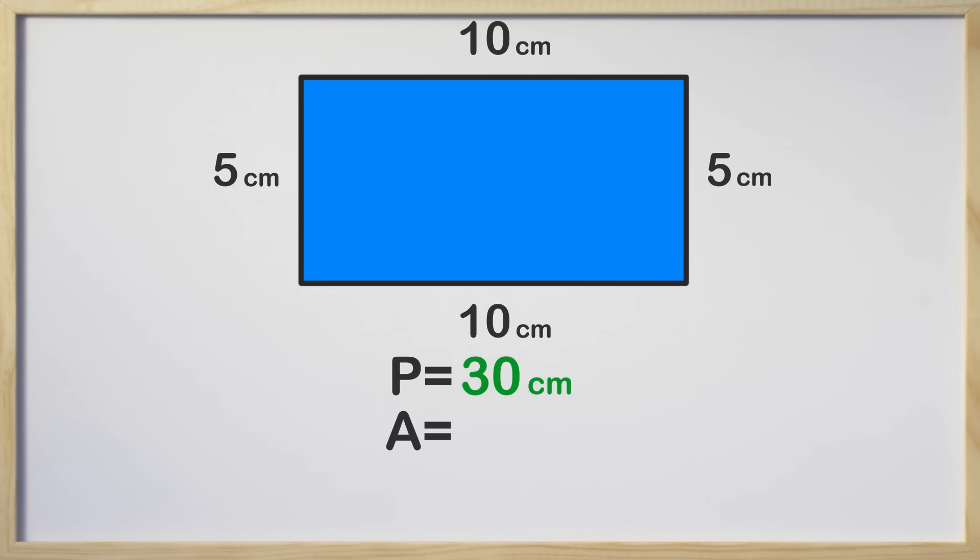To find the area of a square or rectangle you might remember you multiply the length times the width. 5 times 10 is 50 centimeters squared. As you can see area is not the same as perimeter so don't confuse the two. Even if the numbers in some problems equal each other they mean something different.